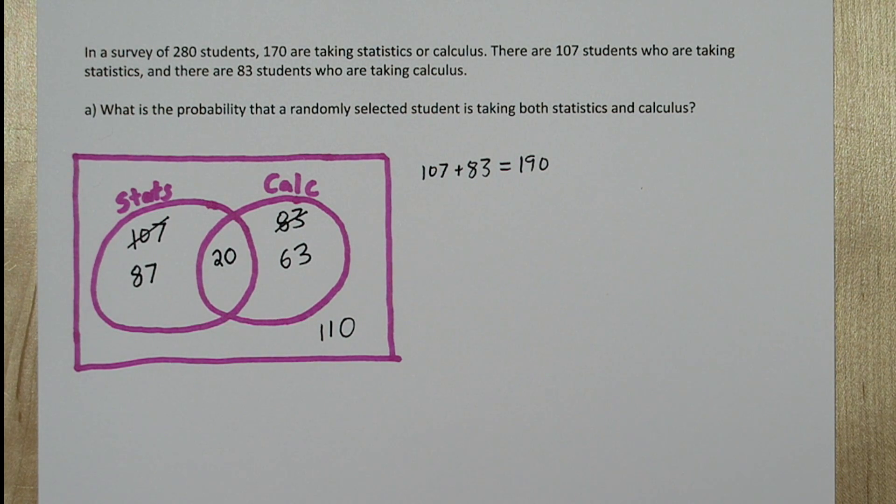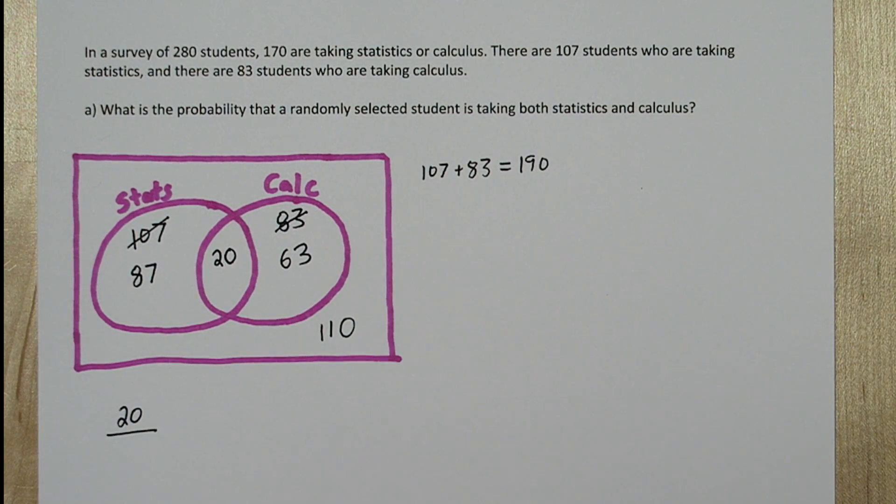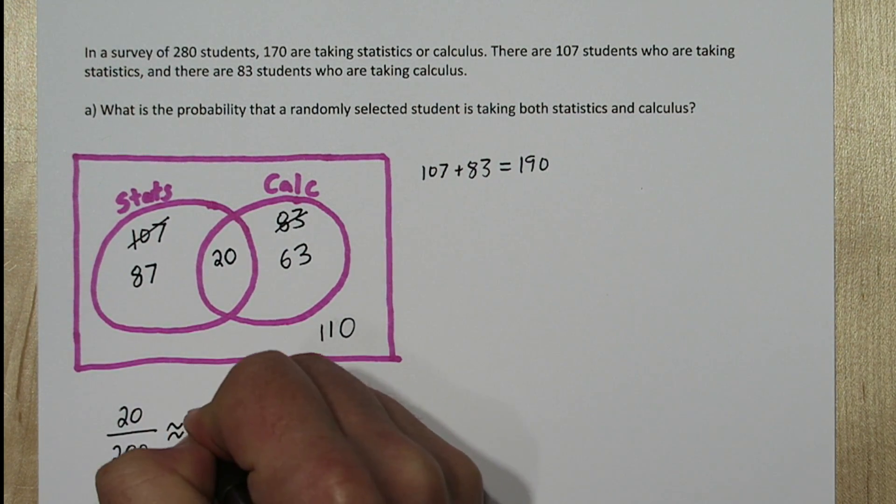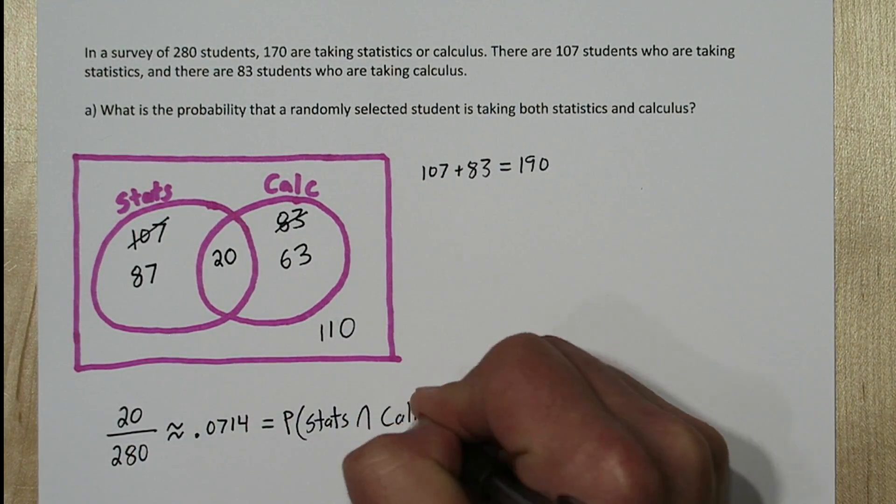So to determine the probability a randomly selected student is taking both stats and calculus, we'll look at the 20 students who are taking stats and calculus and divide it by the total number of students. And that probability is approximately 0.0714.